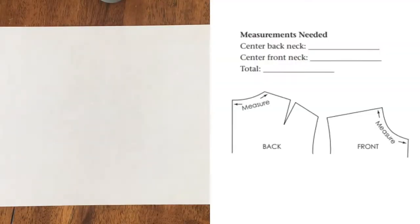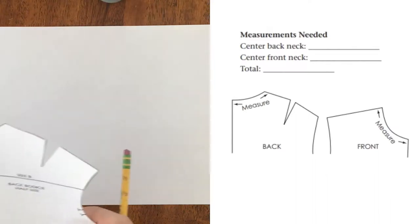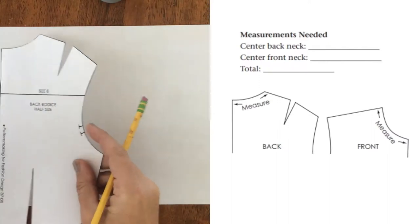We're going to do the basic shirt collar foundation. This is on page 181 in your books. To start with, you do need your front and back bodice.